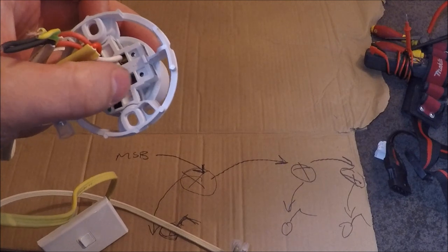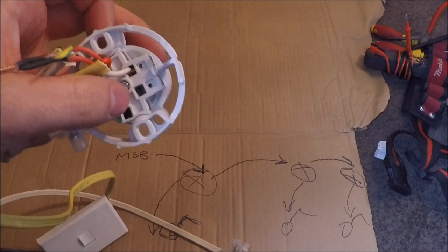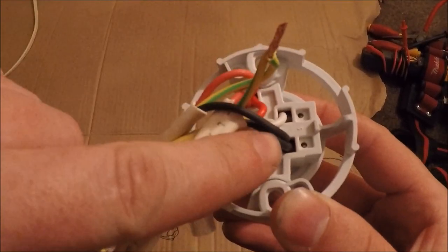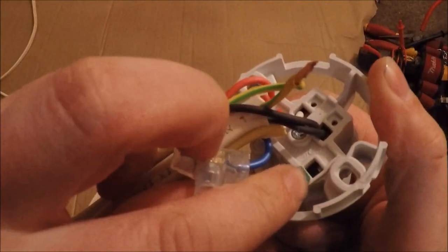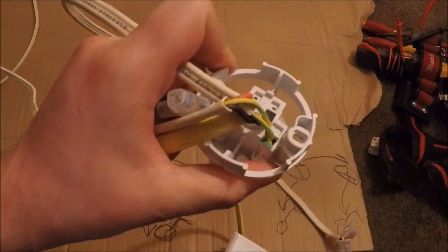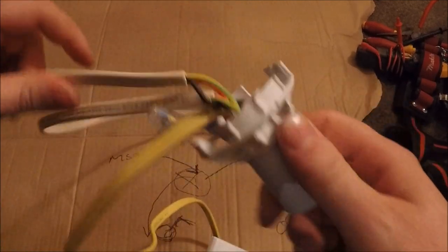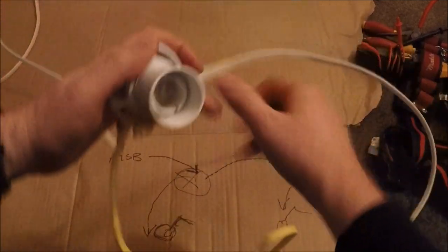Now we'll put the black neutral cables into the one beside it. So as you can see, the black cables are in there. Now we'll put the green earths in there. So the earths went into the one with that green slot. Now that's your wiring done for triple plating.